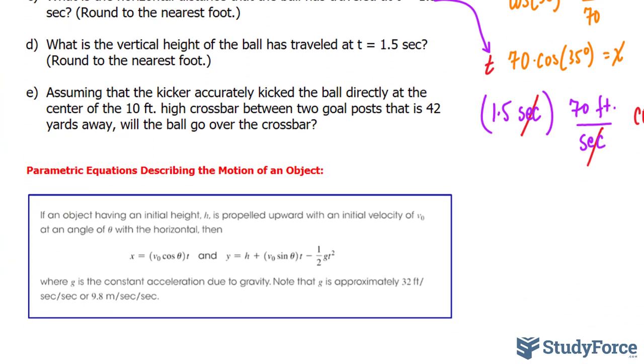For question E, assuming that the kicker accurately kicked the ball directly at the center of the 10 foot high crossbar between two goal posts that is 42 yards away, will the ball go over the crossbar? We'll use the parametric equation that relates horizontal distance. They tell us 42 yards away, but our formula deals with feet, so we need to convert 42 yards into feet. Once we have that value, we substitute it into x and solve for t.